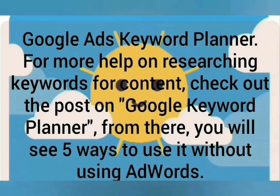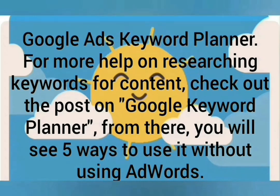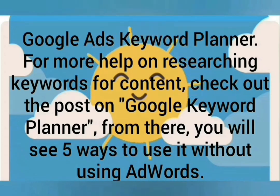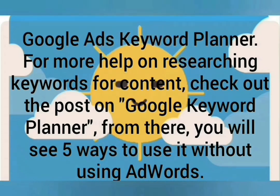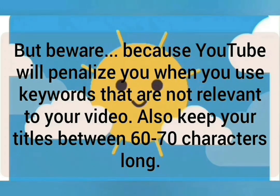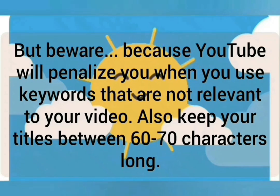You can also use free keyword tools like Google Trends and Google Ads Keyword Planner for more help. When searching keywords for content, check out the post in Google Keyword Planner — from there you will see five ways to use it without using AdWords. But beware, because YouTube will penalize you when you use keywords that are not relevant to your video. Also, keep your titles between 60 to 70 characters long.